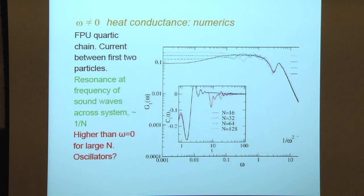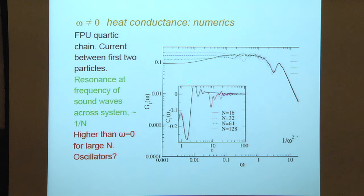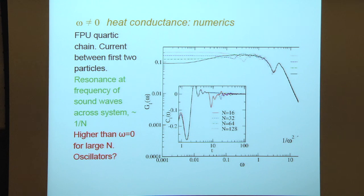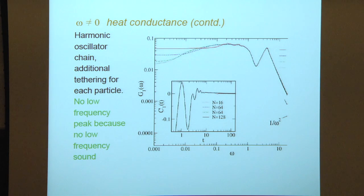This resonant frequency, once you look at the green chain, shows a peak higher than the omega-equals-zero response. So in some sense, although highly damped, it's an oscillator in its response. That's not normally how we think of heat transport as having a natural frequency, but here we have a system where the heat response has some kind of natural oscillation frequency. For a harmonic oscillator chain with an additional tethering, long-wavelength sound waves don't have a low frequency associated with them, so you don't see a progressively lower-frequency peak. For a pure harmonic oscillator chain the 1/N peak is much clearer, including higher harmonics, but the omega-equals-zero conductance does not change with system size.